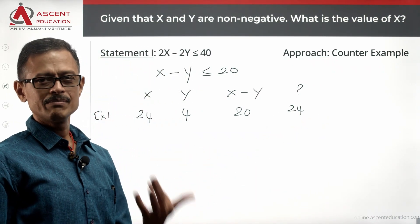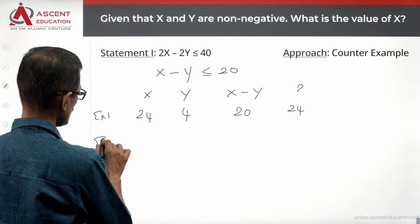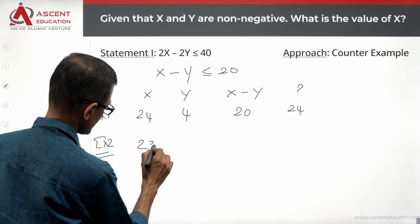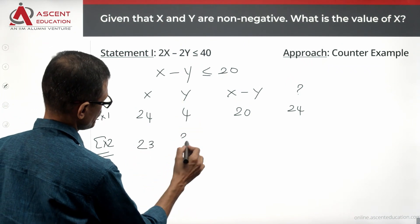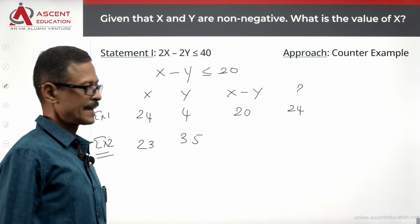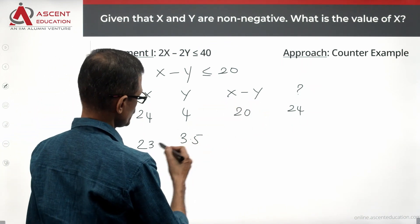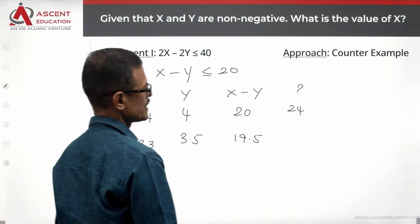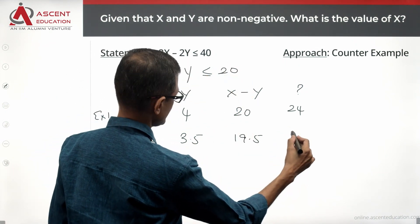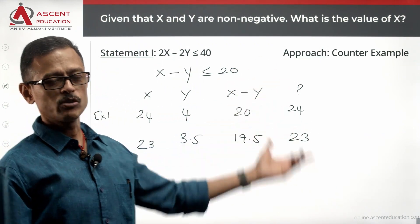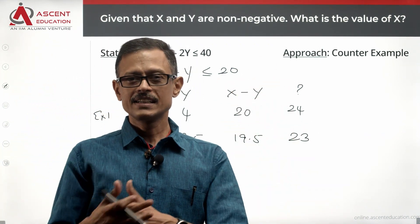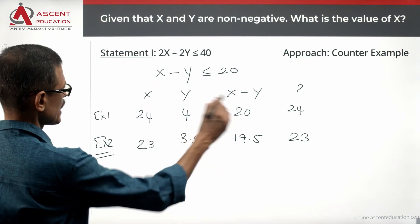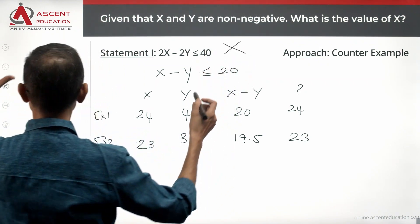Is 24 the only number that works? No — multiple possibilities exist. Let's try x = 23 and y = 3.5. Then x minus y is 19.5, which is less than or equal to 20. So x could be 23, or 23.5 — it need not even be an integer. Infinite possibilities exist; we don't have a unique answer. So Statement 1 alone is not sufficient.